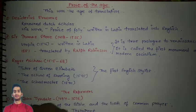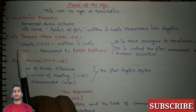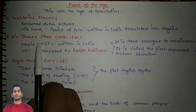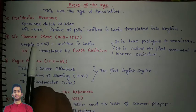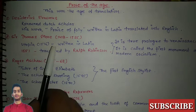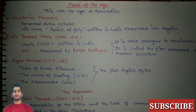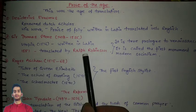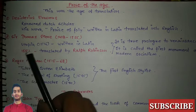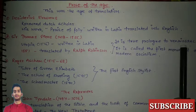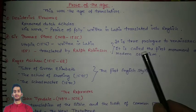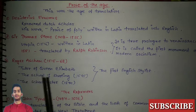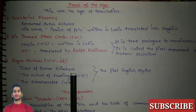The next important writer is Sir Thomas More (1478–1535). His important work was 'Utopia,' published in 1516. It was written in Latin and translated by Ralph Robinson in 1551. It is considered a true prologue to the Renaissance and is also called the first monument of modern socialism.